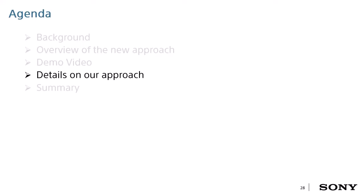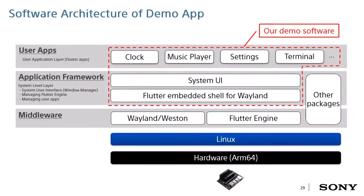Let's move on to details on our approach. Here is the architecture overview of the demo app. The inside of the red frame is our developed software. In the application framework layer, there are mainly two modules: the graphics shell for Flutter module written in C++, and System UI written in Dart and C++. These modules provide system menus for users. The user application layer is for user applications launched from the System UI, which can be Flutter apps or other programs.